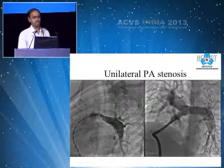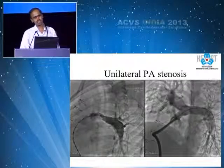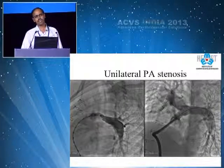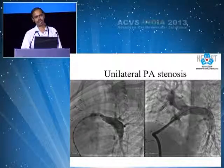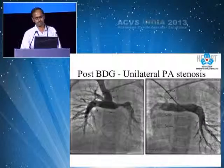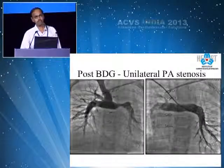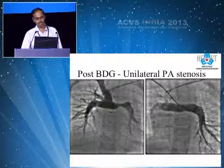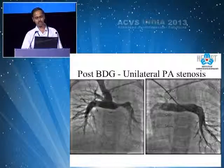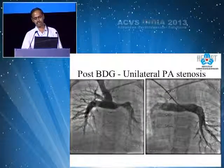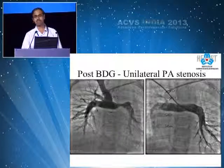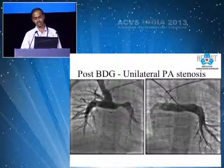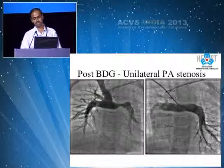Some tetralogies may have extremely severe hypoplasia of the pulmonary arteries. You may feel that if you do a total corrective repair and promote antegrade flow, there may be improvement of the PAs. However, in some cases, the branch pulmonary arteries may remain ridiculously small even after repair, in which case you may have to stent them to very large levels.